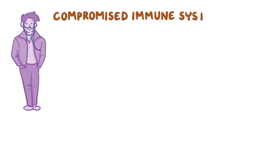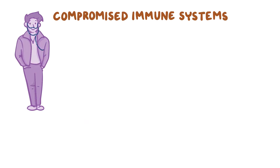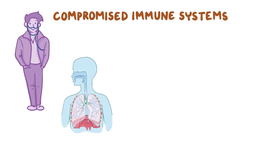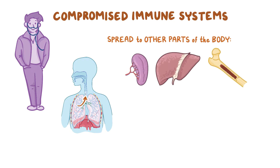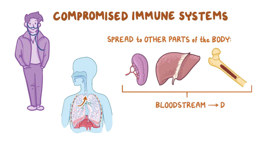In rare cases, and almost universally in individuals with compromised immune systems, the infected macrophages can move into the lymphatics and spread the bacteria to other parts of the body, especially to the spleen, liver, and bone marrow. And from these organs, they can spread to the bloodstream, causing disseminated disease.